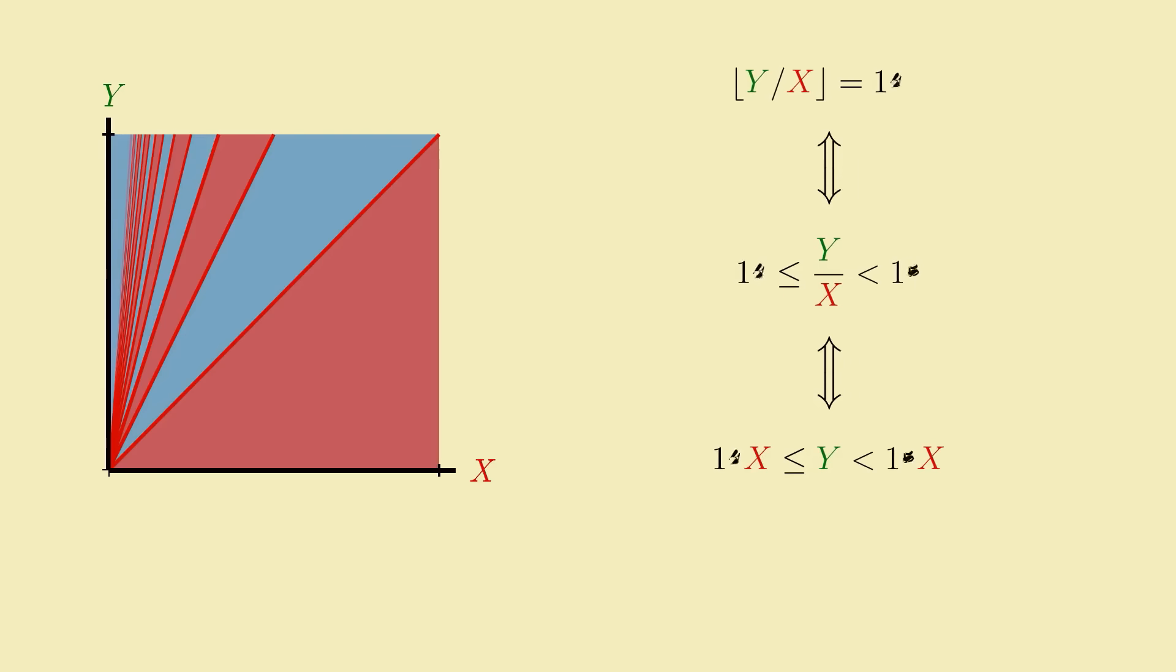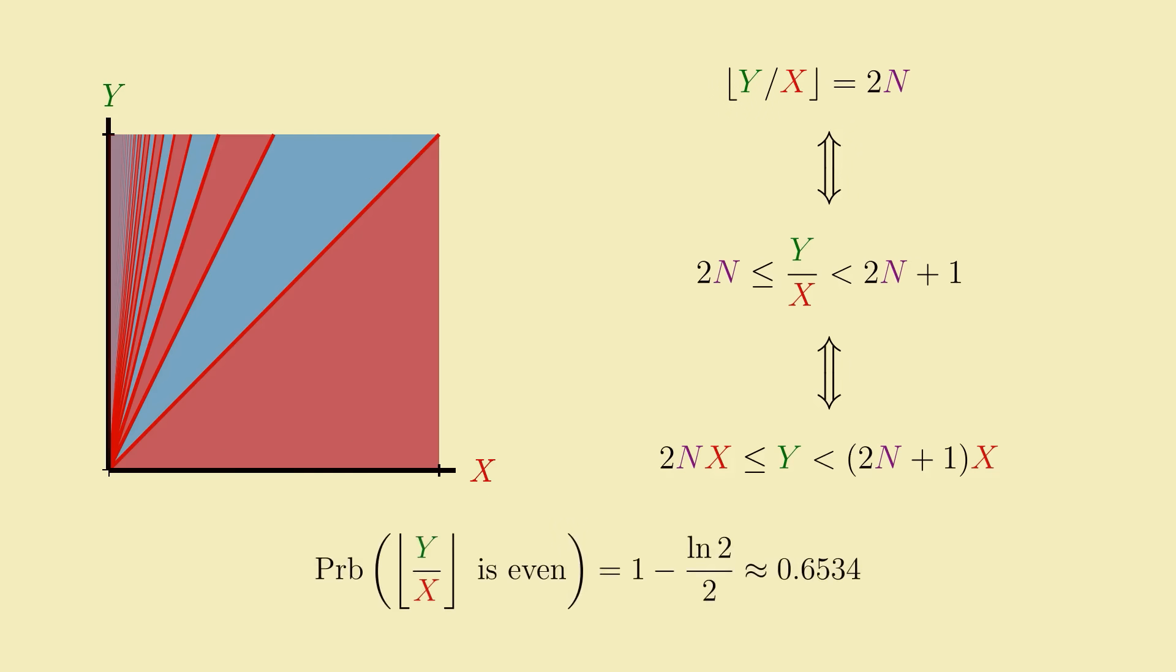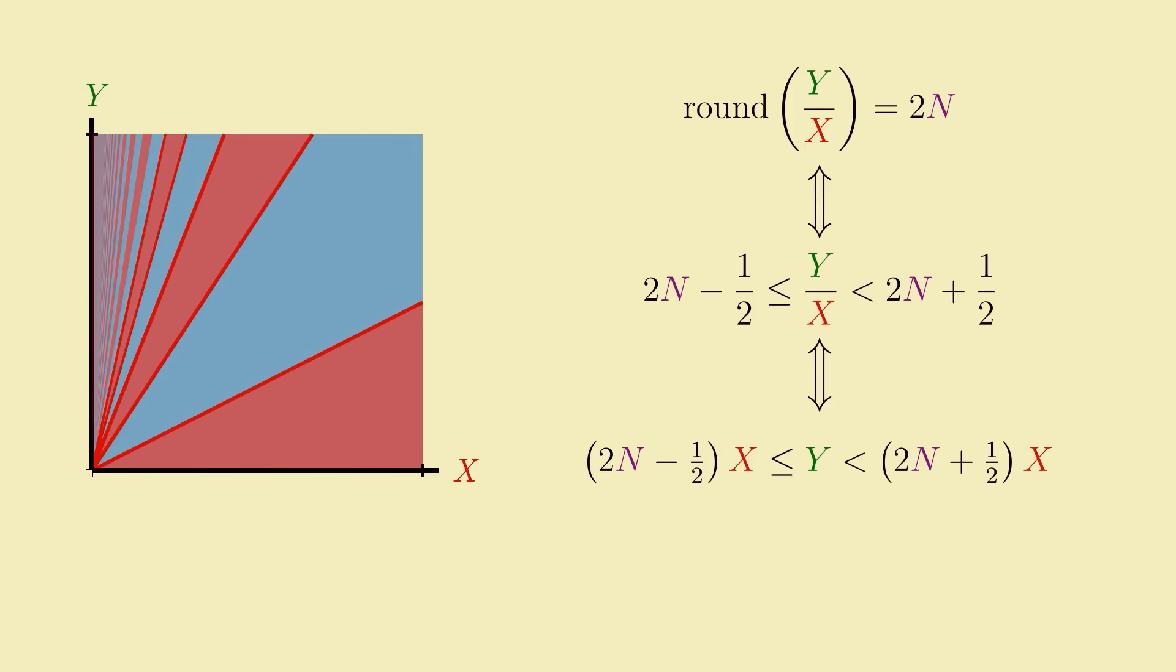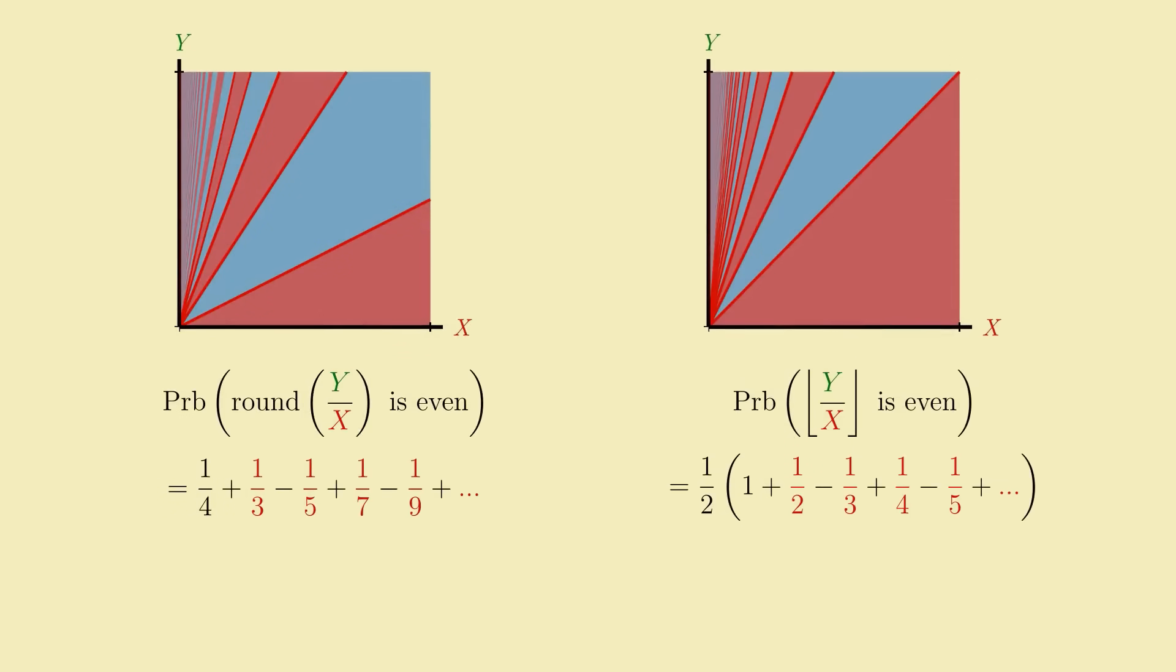So yeah, the probability of rounding a random ratio down to the nearest integer involves the natural log of 2. Whereas the probability of such a ratio rounding either up or down to the nearest integer involves pi. This basically came about because both versions of the problem produced the same overall kind of infinite series, an alternating series of reciprocal integers. But yet, despite these two series being structurally similar, the seemingly subtle difference of whether we alternatingly add all reciprocal integers, or just reciprocal odd integers, is enough to change our answer from involving e to involving pi.